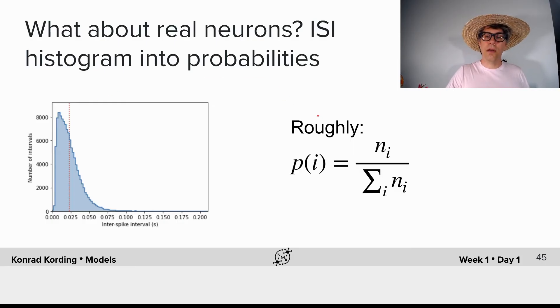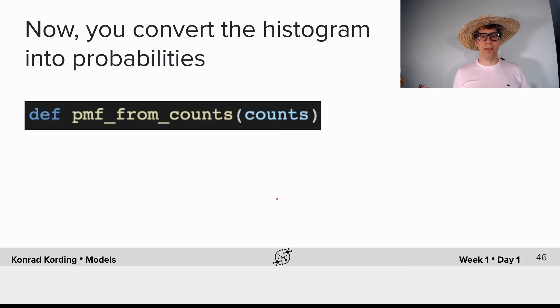In first approximation, correctly as we go towards large numbers, we have that the probability that we land in a given bin is the number of times that we landed in that bin divided by the overall number of spikes that we have. That's the probability that we're in one of those. And with this, we can convert a histogram into a probability distribution.